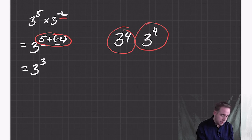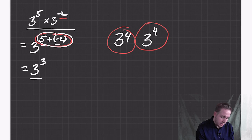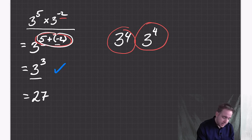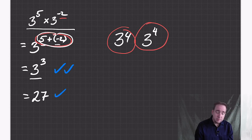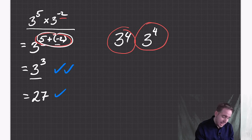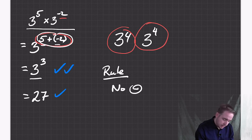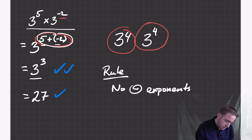It's important to read the instructions on the question. Sometimes all we care about is that you find the right pattern and get it to one exponent — and that's enough. Sometimes the question wants you to go a step further and work out what three to the power of three actually is: three times three times three is 27. And as a rule, we say we don't want negative exponents in a final answer.